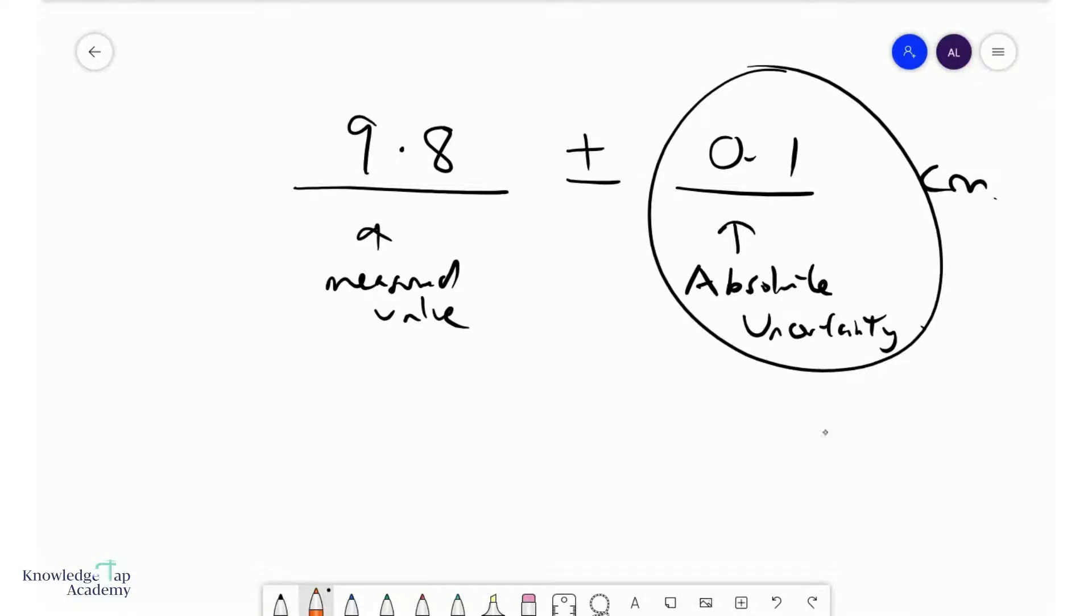Now, there's another type of error. This can be called your fractional error, or it can be called your percentage error, and this is simply taking the absolute divided by the measured value.